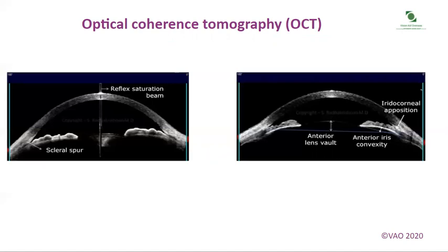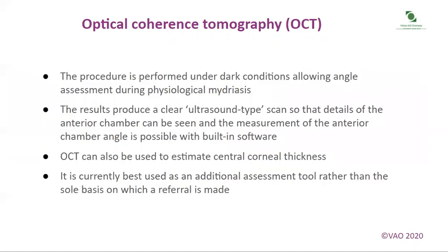These are two photographs taken from OCT. The procedure is performed under dark conditions allowing angle assessment during physiological mydriasis. The results produce a clear ultrasound-type scan so that details of the anterior chamber can be seen and measurement of the anterior chamber angle is possible with built-in software. OCT can also be used to estimate central corneal thickness. It is currently best used as an additional assessment tool rather than the sole basis on which a referral is made.